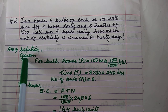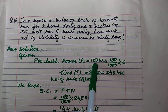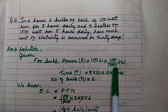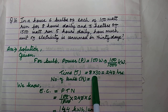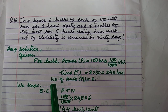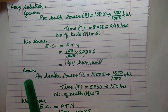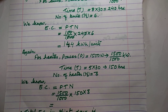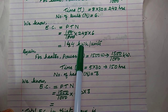For the bulbs: power P = 100 watt = 100/1000 kilowatt. Time = 8 hours per day × 30 days = 240 hours. Number of bulbs N = 6. Using the electrical consumption formula EC = P × T × N, putting the values gives 144 kilowatt-hours or units.